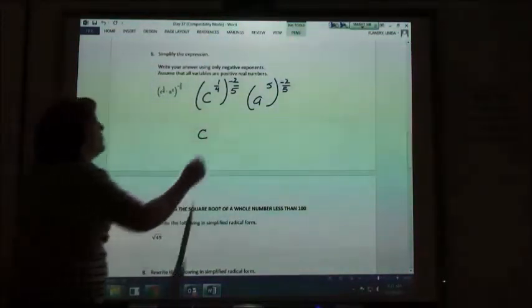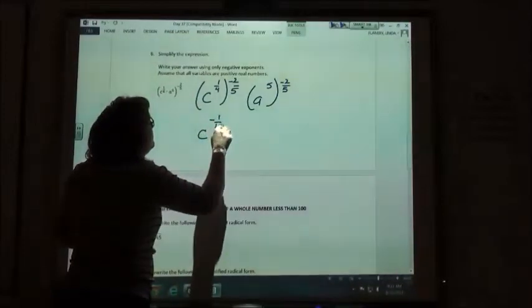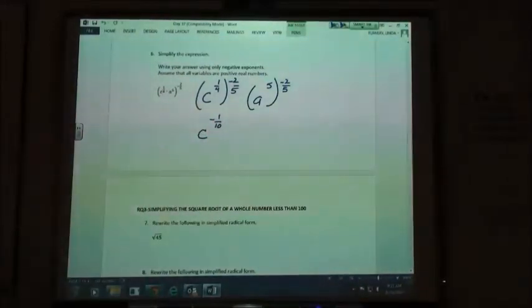Negative one-fifths. Negative one-tenth. It would be negative two-twentieths, which reduces down to one-tenth. Or you could cancel the two and the four and reduce it first.